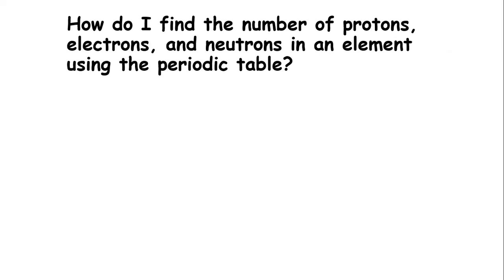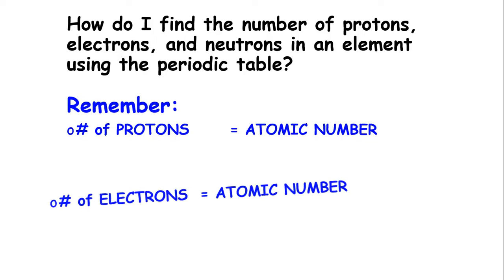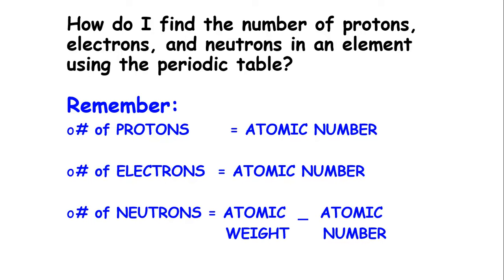How do I find the number of protons, electrons, and neutrons in an element using the periodic table? The number of protons equals the atomic number. Also, the number of electrons equals the atomic number. And to find the number of neutrons, take the atomic weight and subtract the atomic number. That will give you the number of neutrons in that element.